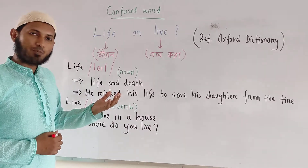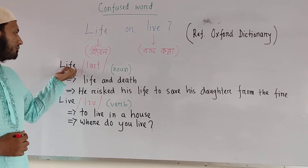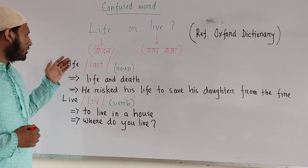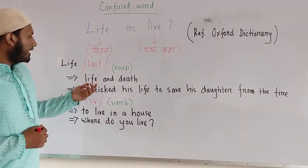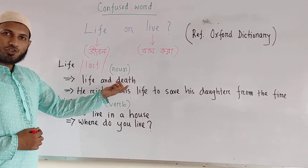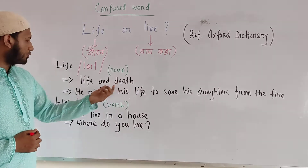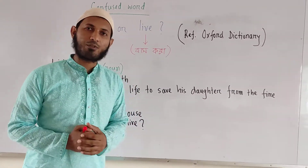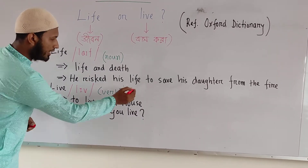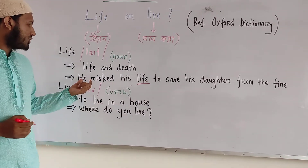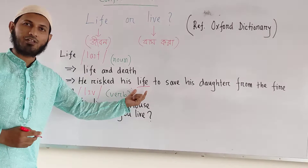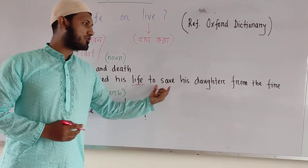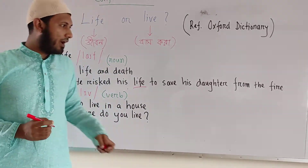Let's see the explanation. Life — this is a noun. Life and death. Life is a living. He risked his life to save his daughter from the fire. Here, you can see: he risked his life to save his daughter from the fire.